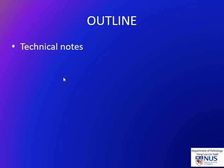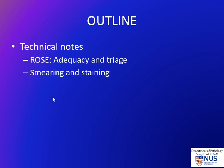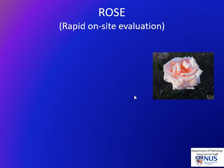We're going to look at some technical notes. First on ROWS, which is Rapid On-Site Evaluation — how do we actually assess adequacy and triage the specimens? Then I'm going to show you how we do smearing as well as staining, and then finally focus on some technical tips and hopefully clear up some misconceptions. In this first video we will focus more on ROWS, on specimen adequacy and triage.